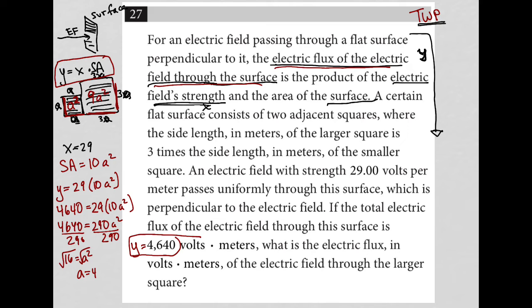So what is the electric flux, it says, in volts times meters of the electric field through the larger square? So if we're just going through the larger square, well, so what is the electric flux? Well, that's Y. So we're creating a brand new equation. So saying, what's Y? So I have Y equals, well, what do I know about Y? I know that Y is always just equal to X, which is the electric field strength, which we already were told is 29, times the surface area. But the surface area in this case is just through the larger square. So the surface area of the larger square is 9A squared. So times 9A squared.